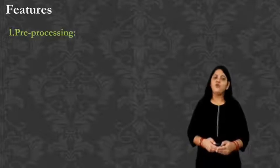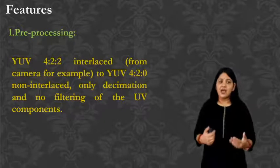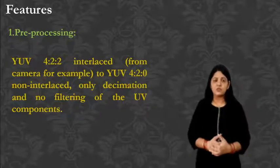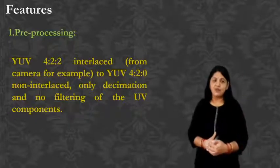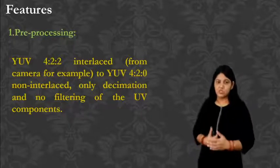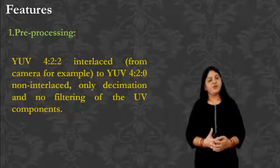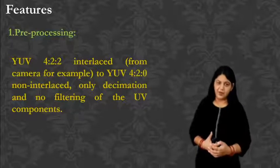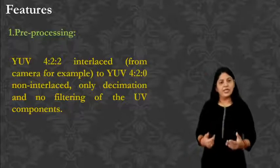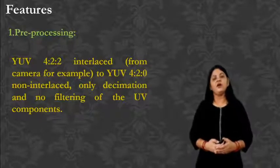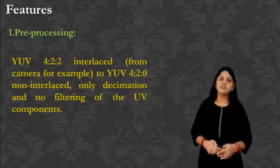What are the features? First is pre-processing. The YUV 4:2:2 interlaced — here the value of Y (luminance) is 4, U value is 2, and V value is 2. That is why it is 4:2:2 interlaced, from a camera for example. Now, YUV 4:2:0 non-interlaced requires only decimation and no filtering of the UV component. This is the first step.